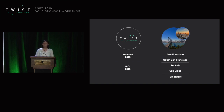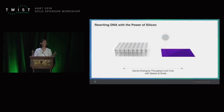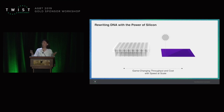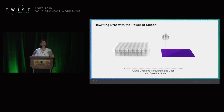TWIST is founded on a foundation of a silicon chip where we can synthesize millions of oligos. That's in contrast to the classical synthesis of DNA on a 96-well plate. The silicon chip gives us a very disruptive throughput and cost advantage, as well as a quality advantage, to support your targeted sequencing workflow.